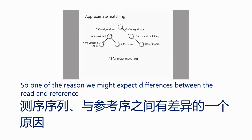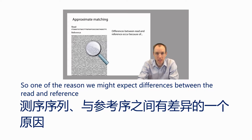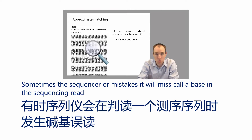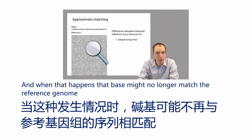One of the reasons we might expect differences between the read and the reference is because of sequencing errors, like we discussed before. Sometimes the sequencer will make mistakes — it will miscall a base in the sequencing read. And when that happens, that base might no longer match the reference genome.